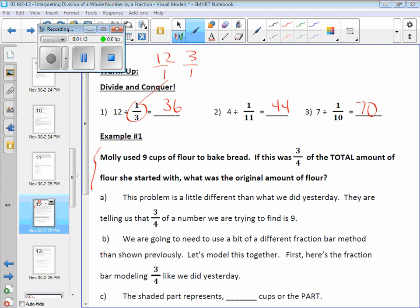So let me read it out loud to you. Molly used nine cups of flour to bake bread. If this was three quarters of the total amount, if what was three quarters of the total amount? If this nine cups was only three quarters of the total amount of the flour she started with, what was the original amount of the flour?